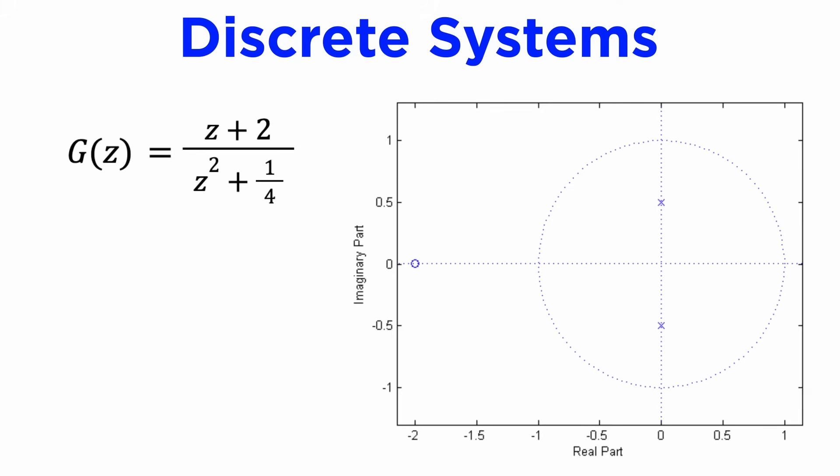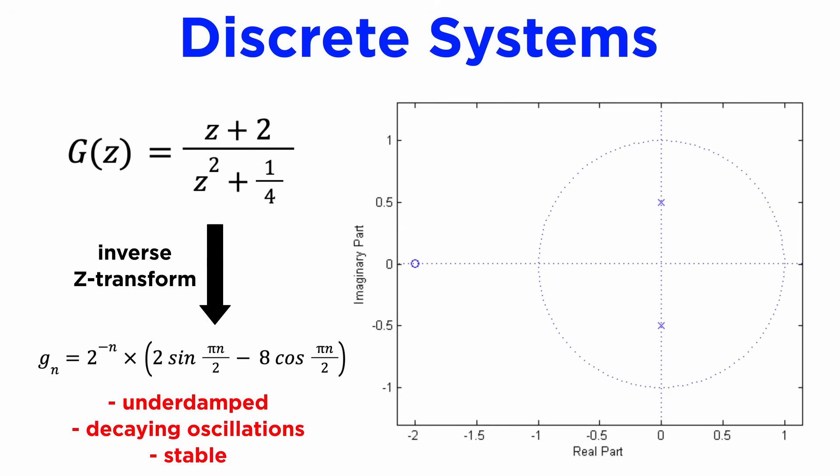For example, the function g of z equals z plus 2 over z squared plus a quarter has a pole zero plot as shown, and since all poles are within the circle, it represents a discrete system whose impulse response is asymptotically stable, and if we take the inverse z-transform of g of z using the table, we will find that it corresponds to the underdamped and decaying oscillations case, verifying its stability.